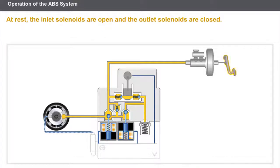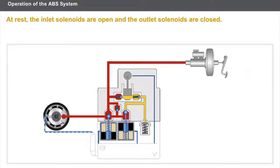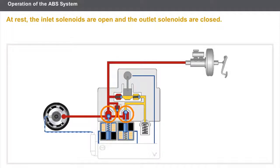In the case of braking without regulation, the ABS unit does not intervene. The braking pressure is created via the hydraulic unit. At rest, the inlet solenoids are open and the outlet solenoids are closed. The increase in pressure takes place inside the circuit and builds up uniformly.